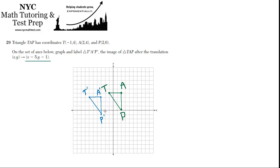The blue triangle is TAP prime. If you really want to show it on your test, you label it triangle T prime, A prime, P prime — and you've done it.